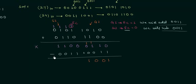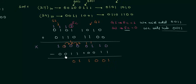Now we will perform the subtraction for group 2. 0 minus 1 — we take a borrow, so we have 2. We have 2 here and we are left with 1 at this position. 2 minus 1 is 1, 1 minus 1 is 0, this position has given borrow so we are left with 0 here. 0 minus 0 is 0 and 1 minus 0 is 1. So this is our answer.